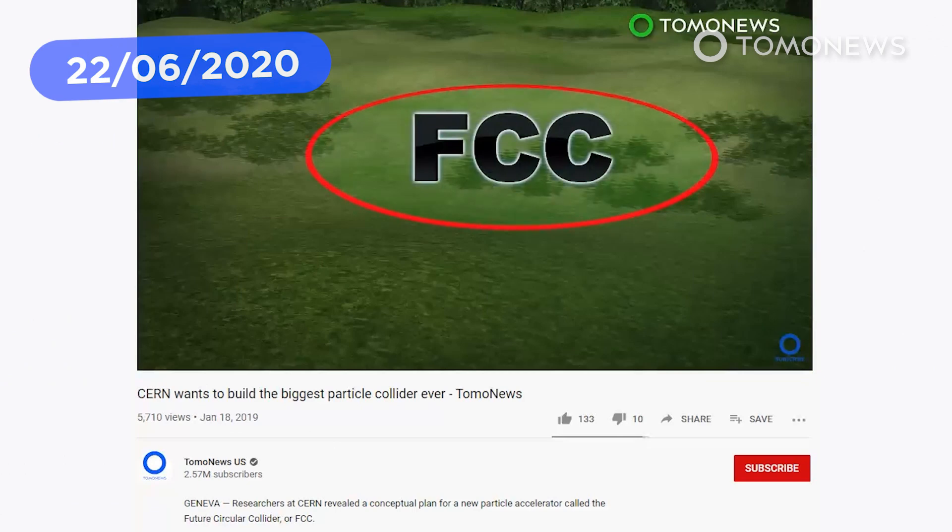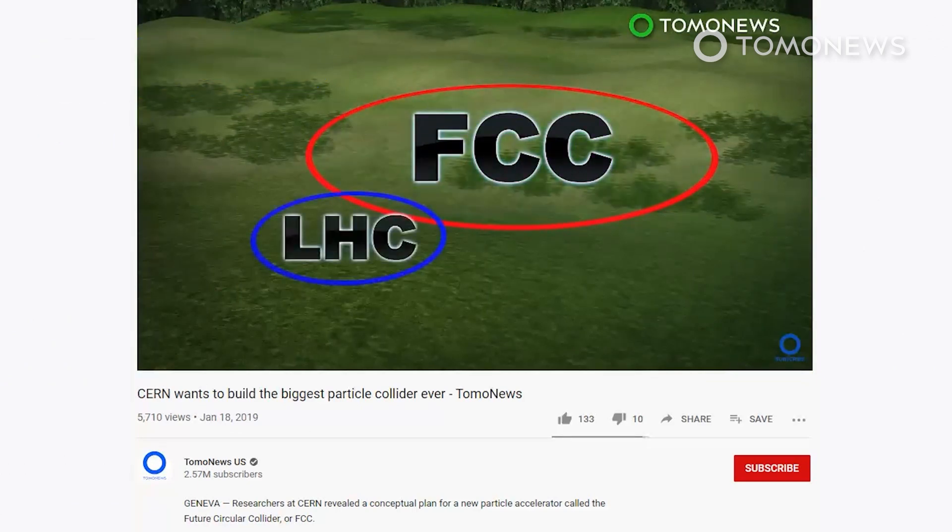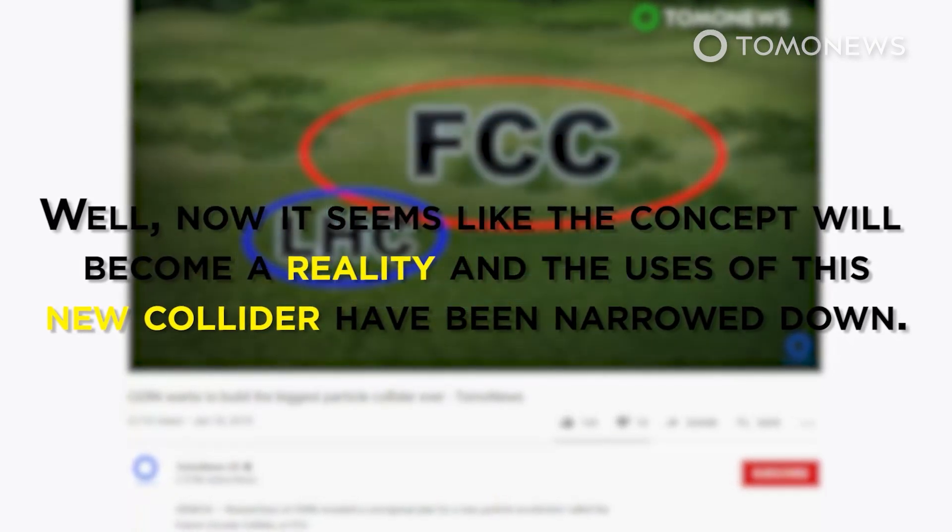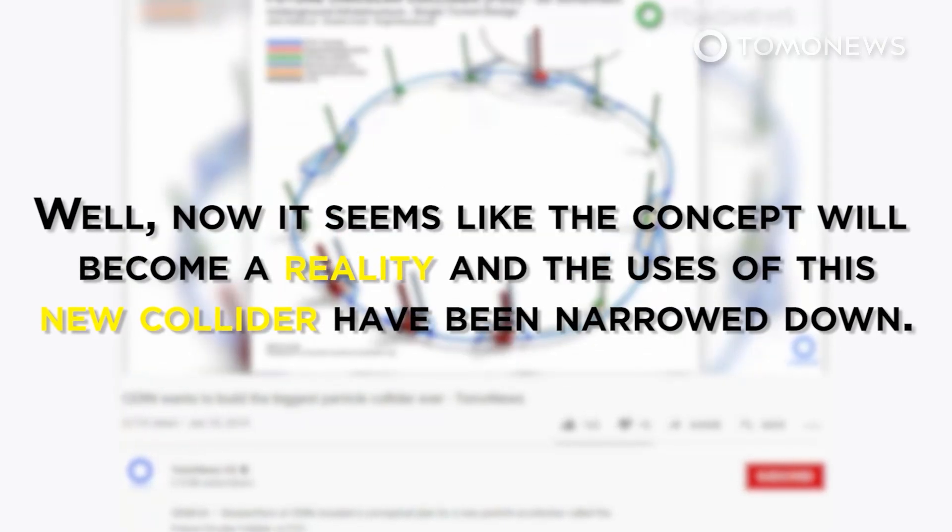Exactly one year ago, we told you that scientists at CERN had released a conceptual plan for an even bigger particle accelerator called the Future Circular Collider, or FCC. Well, now it seems like the concept will become a reality, and the uses of this new collider have been narrowed down.